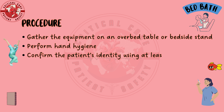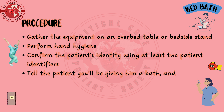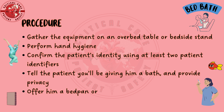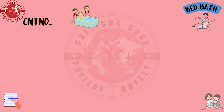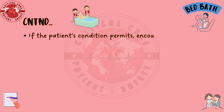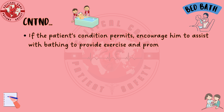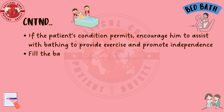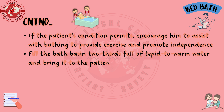Gather the equipment on an overbed table or bedside stand. Perform hand hygiene. Confirm the patient's identity using at least two patient identifiers. Tell the patient you'll be giving him a bath and provide privacy. Offer him a bedpan or urinal if needed. Help the patient into the supine position if possible. If the patient's condition permits, encourage him to assist with bathing to provide exercise and promote independence.